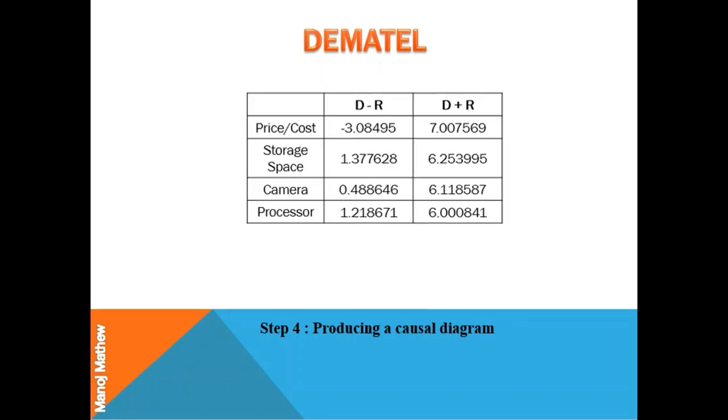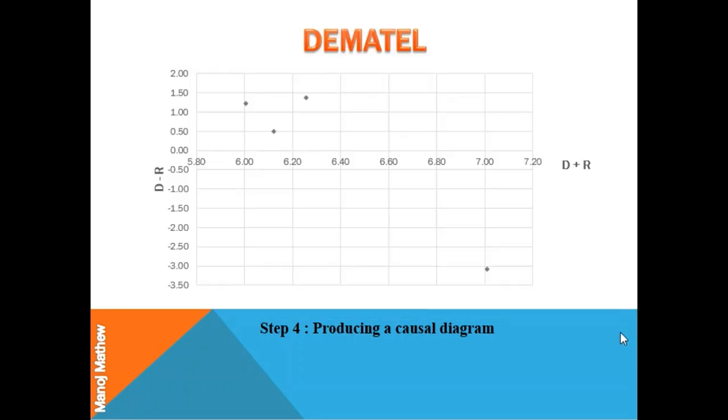These are the D plus R and D minus R values. Next, we will create the causal diagram using the scatter plot in Excel. This is the scatter plot in which D plus R is represented in the horizontal axis and D minus R is represented in the vertical axis.